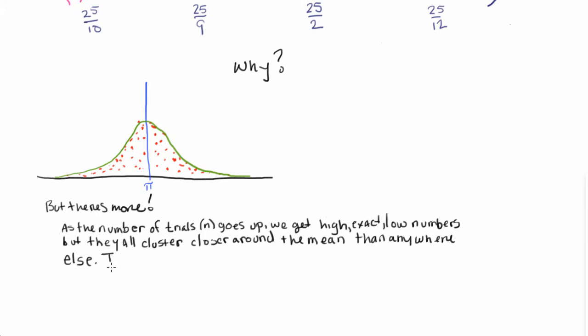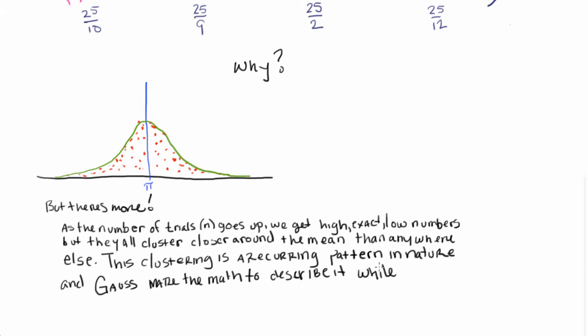And this clustering is actually a recurring pattern in nature. And mathematicians like Gauss used math to describe it, while a mathematician named Pearson dubbed it the normal distribution.